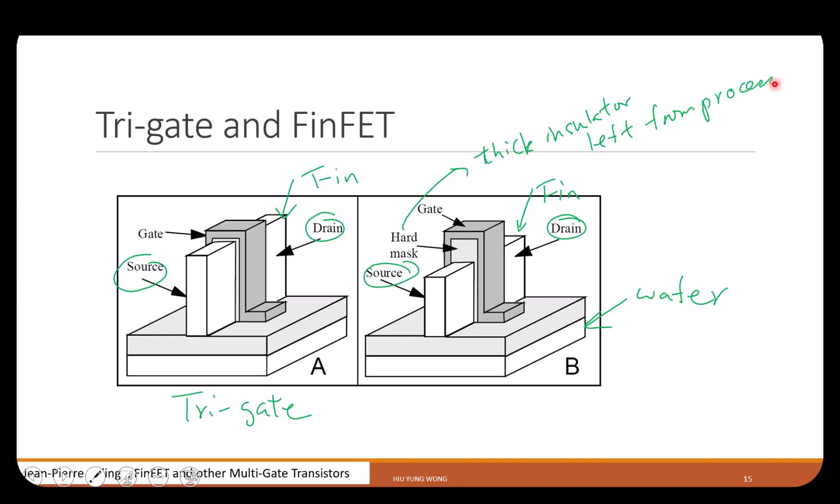This hard mask is left from the process. At the beginning, people were not able to make the FinFET without leaving the hard mask due to lithography reasons. UC Berkeley realized this at the very beginning and were trying to improve this.